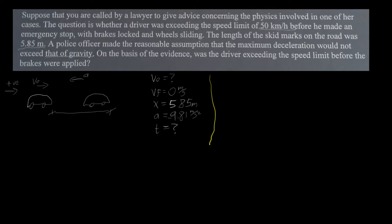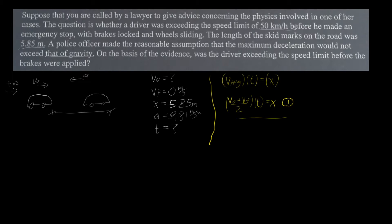There are two equations we should be familiar with before starting. The first is: average velocity times time equals distance. We can also express average velocity as (V_initial + V_final) / 2, so the equation becomes (V₀ + V_f) / 2 × t = x. We can call this equation one.